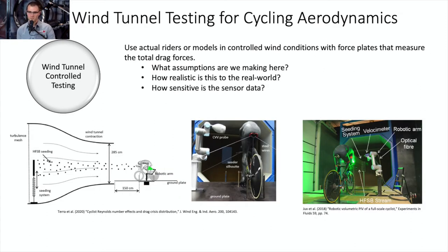Moving on to wind tunnel testing: we have actual riders or models in controlled wind conditions, with forces typically measured using a force plate underneath the tunnel floor, measuring total drag and lift forces. We need to ask what assumptions we're making, how realistic this is to the real world, and how sensitive and repeatable our sensor data is. In a wind tunnel, airflow is produced using fans, straightened, and turbulence is reduced, giving quote-unquote perfect flow conditions.